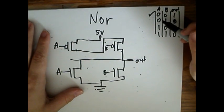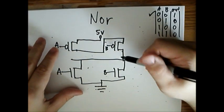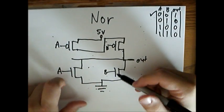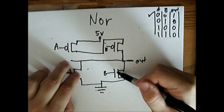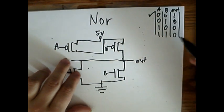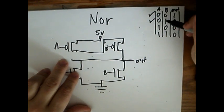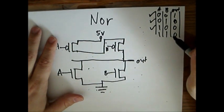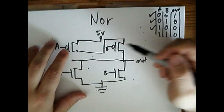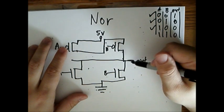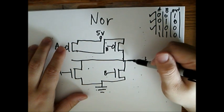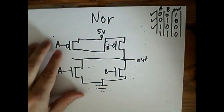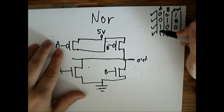So now when A is 0 and B is 1, this connection will be open because of this one being off. And this connection will be made because this is open, but this is closed. So therefore our output is connected to the ground, 0. And vice versa. And now when both A and B are 1, both of these connections are open, so therefore there's no 5 volts connecting to output. And there will be two closed connections to the ground. So therefore our output will still be 0. So they both check out.